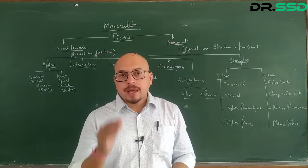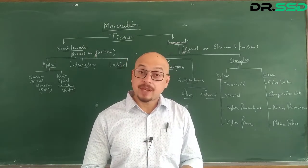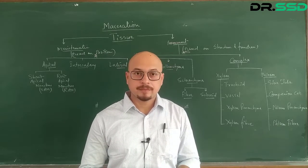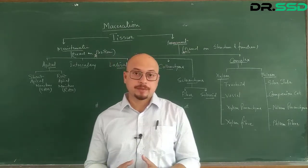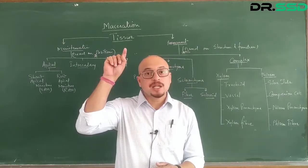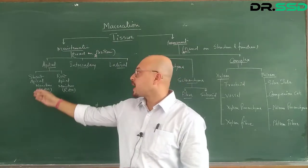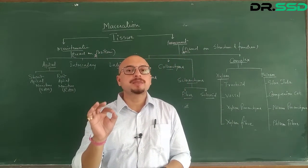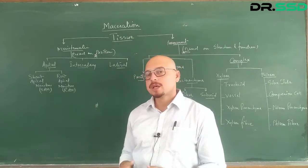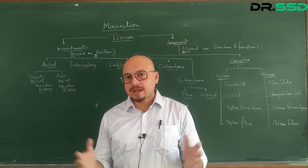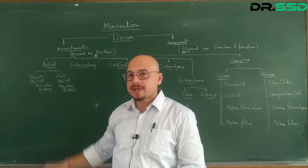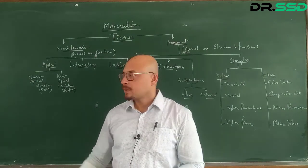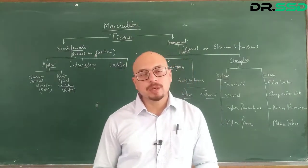Apical meristems, as the name suggests, are placed at the apices or the tip. Based on the tip, they are again of two types. If the meristem is present at the tip of the shoot, it is termed shoot apical meristem. If the meristem is situated at the tip of the root, it is termed root apical meristem. By default, shoot apical meristem is responsible for the growth of shoot length, and root apical meristem is responsible for the growth of root length.